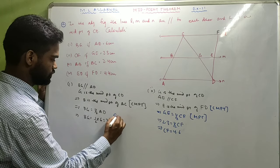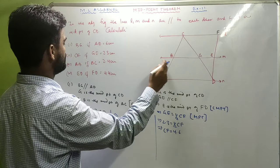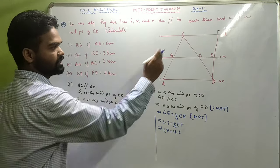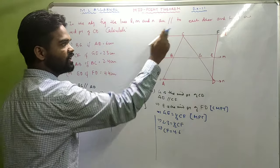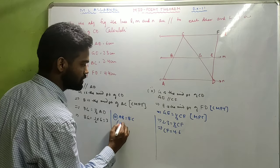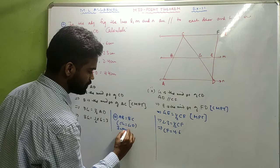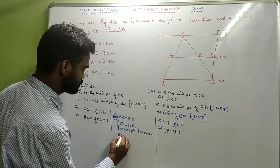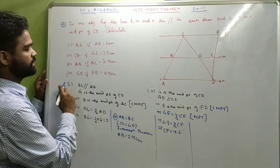Find AB if BC equals 2.4. By the intercept theorem, since CD is bisected by the three parallel lines, AC will also be bisected, meaning AB equals BC. Since CG equals GD, by the intercept theorem AB equals 2.4 centimeters.